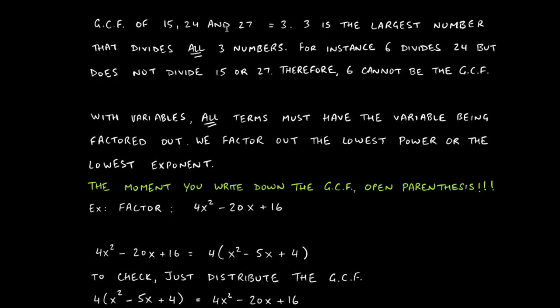Had these numbers been 15, 24, and 30, well 6 divides both 24 and 30, and 15 divides both 15 and 30, but no single number divides all three. For instance, 6 divides 24 but does not divide 15. The C in GCF stands for common — it has to be common to every single term, not just two of the three.